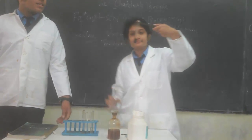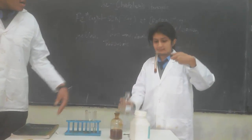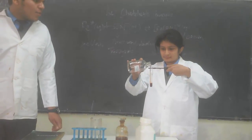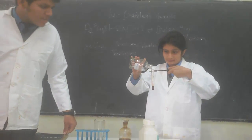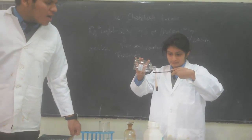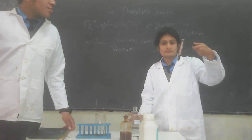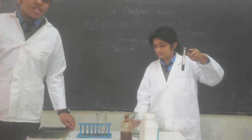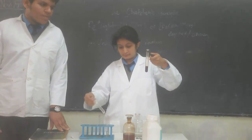Now we are going to see the deep red coloration. If we add more then the intensity will increase. Now after some time the deep red coloration becomes constant. This indicates that the reaction has reached equilibrium.